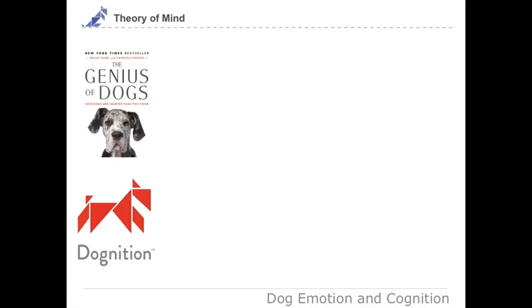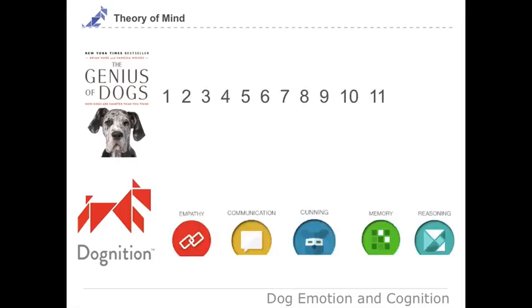For this lecture, what will be most relevant is chapter three in the book, and of course anything in Dog Vision, but I think especially the communication or the reasoning games might be useful here.